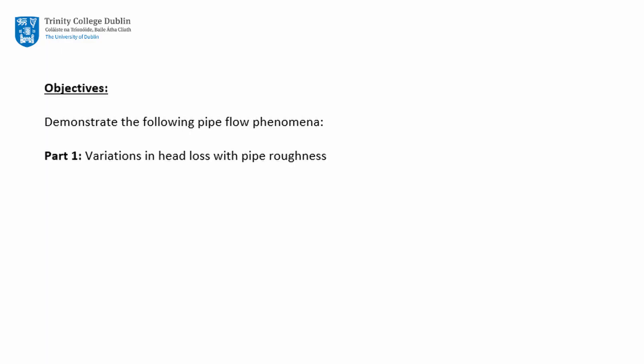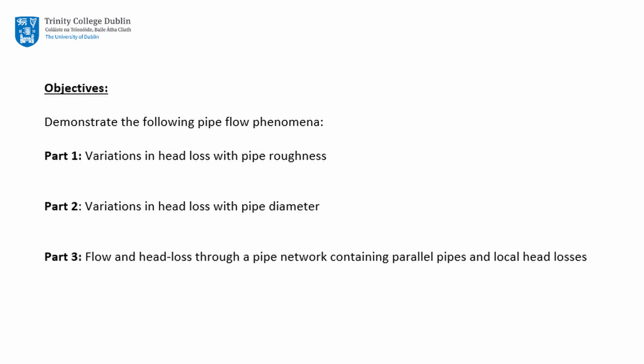Number one: variations in head loss with pipe roughness. Number two: variations in head loss with pipe diameter. Number three: flow and head loss through a pipe network containing parallel pipes and local head losses.